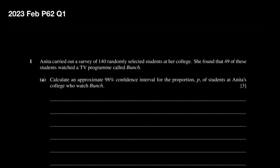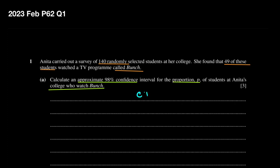Anita carried out a survey of 140 randomly selected students at her college. Let's underline 140. She found that 49 of these students watched a TV program called Bunch. The first part asks us to calculate an approximate 98% confidence interval for the proportion P of students at Anita's College who watched this particular program. This question is about confidence interval for population proportion.